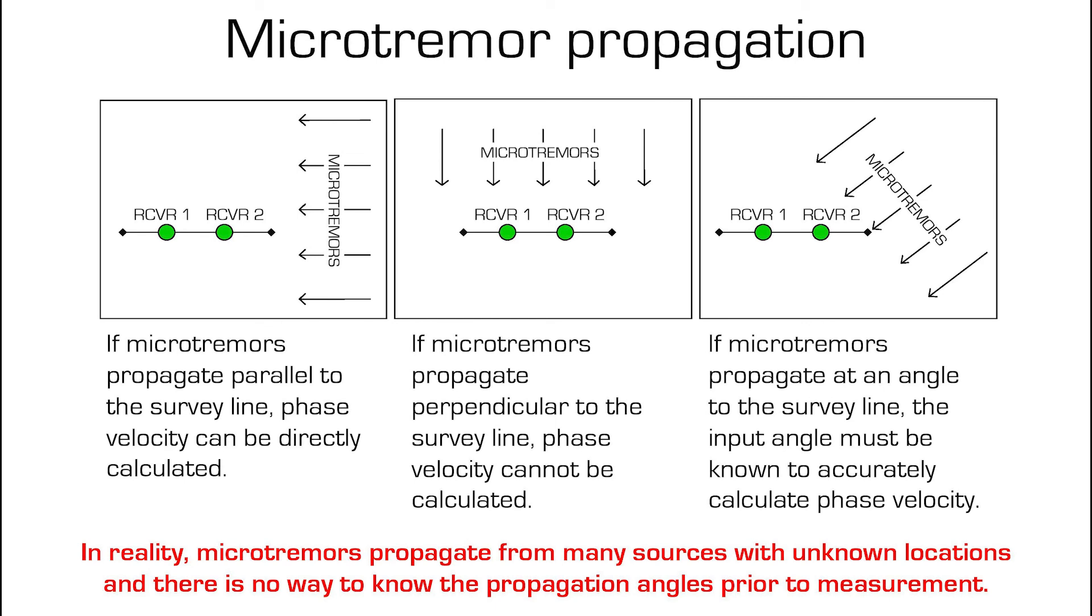Microtremors propagate from all directions, and depending on the nearby environment, microtremors might primarily propagate in one direction. For example, propagating perpendicular to the strike of a road with active car traffic.